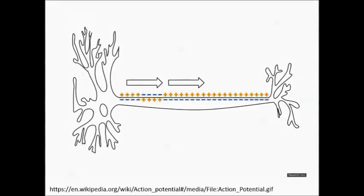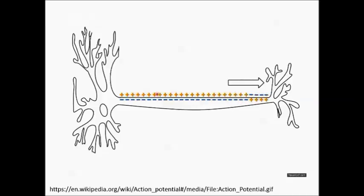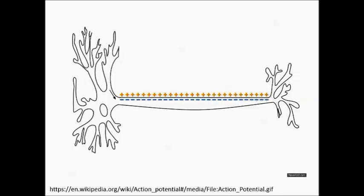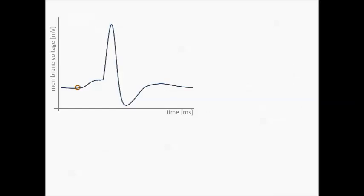Sodium channels play an important part in the communication in the nervous system. All long distance communication uses action potentials that propagate along axons to inform other nerve cells. Action potentials are rapid changes of the neuronal membrane potential. These electrical signals are regenerated many times as they travel along the axon. This figure shows the change of the membrane potential over time when an action potential is recorded in the middle of the axon.